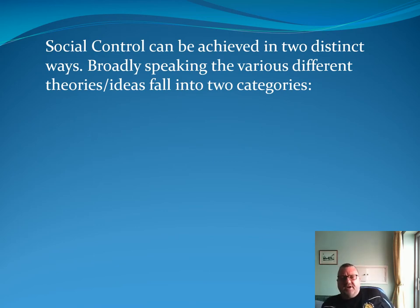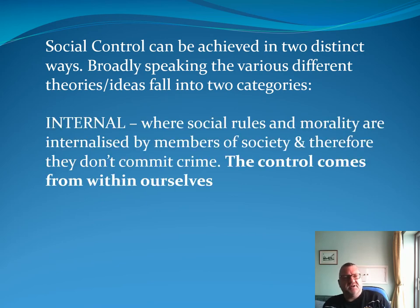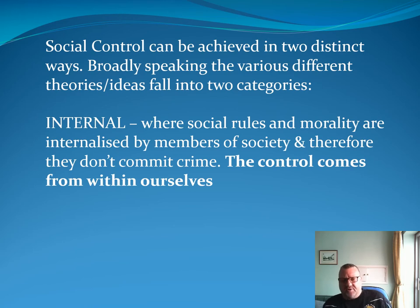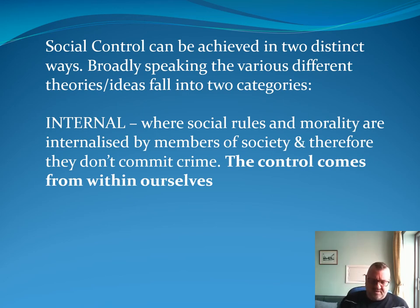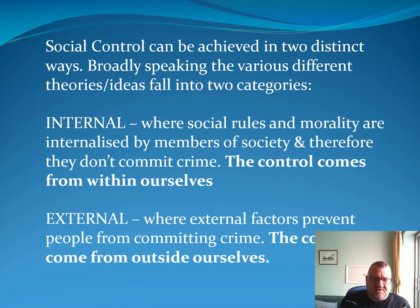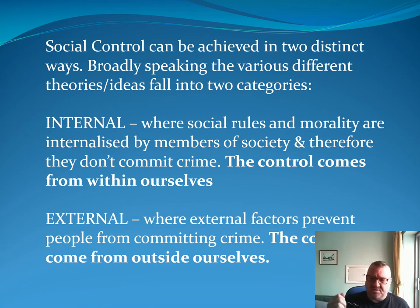Social control can be achieved in two distinct ways. You've got internal social control — the idea that rules and morality are internalised by members of society and therefore they don't commit crime. The control comes from within us. Alternatively, you have external forms of social control — these stop people from committing crime in the first place. That's the control that comes from outside ourselves — Big Brother watching you, that sort of thing.